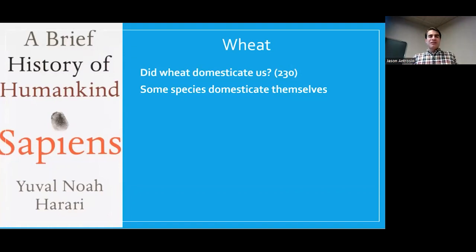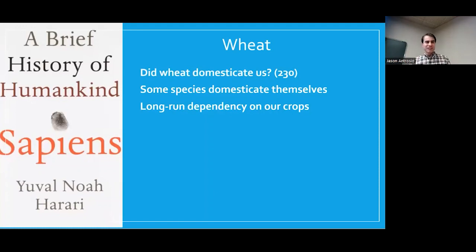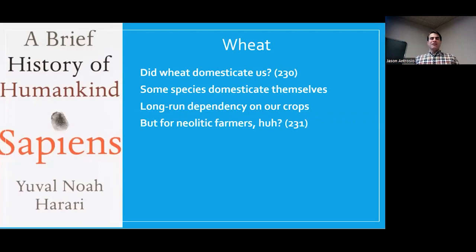But wheat is not one of the self-domesticating species because it's a plant that can't mirror our emotions. It is true that in the long run we are dependent on our crops, but for Neolithic farmers this story doesn't make sense — they weren't really dependent on the wheat. In fact, this narrative echoes something we've heard before: the fall of the Garden of Eden in the Bible.